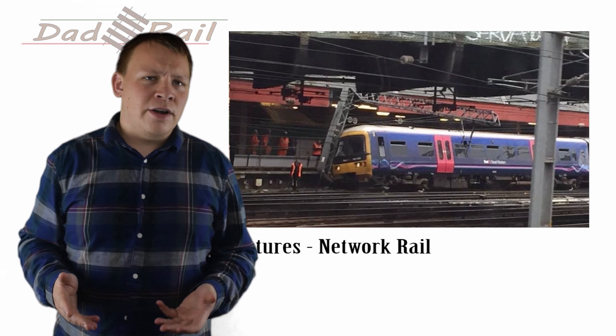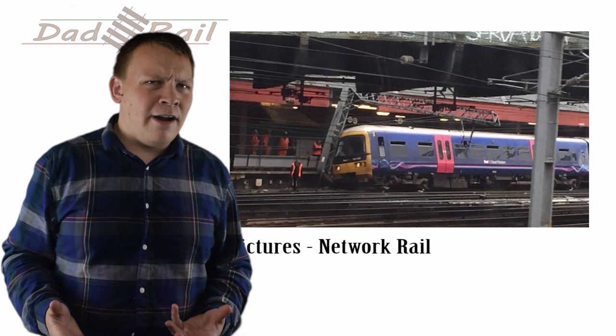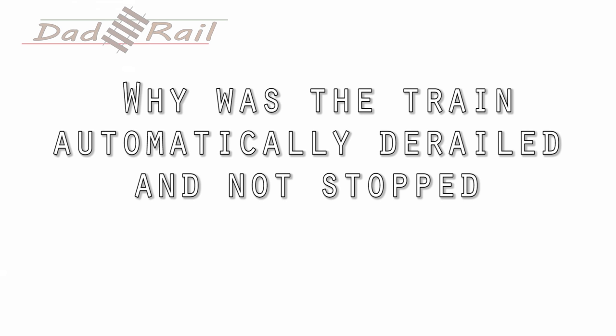Network Rail have told us that the train running around the signal had a SPAD and was automatically derailed, but looking through the comment sections on some social media websites, people are asking, why was the train automatically derailed? Why wasn't it automatically stopped? Surely that would have been better. So I thought I'd explain some of the possible reasons why the train may have been derailed instead of stopped.